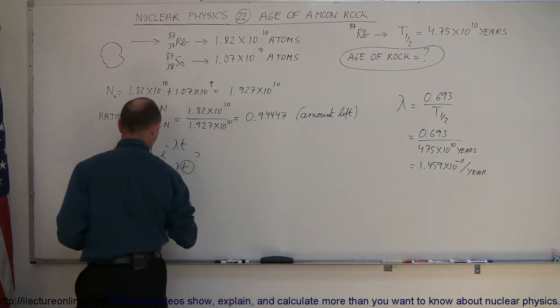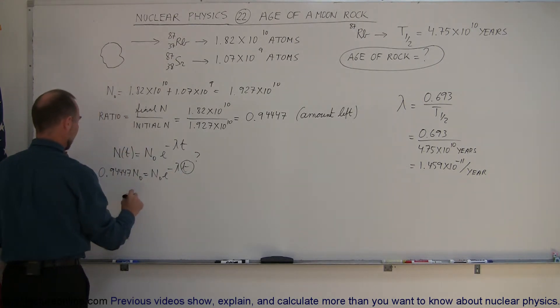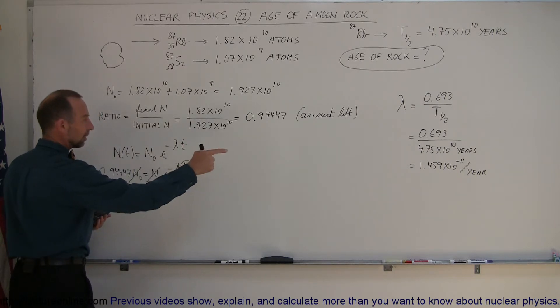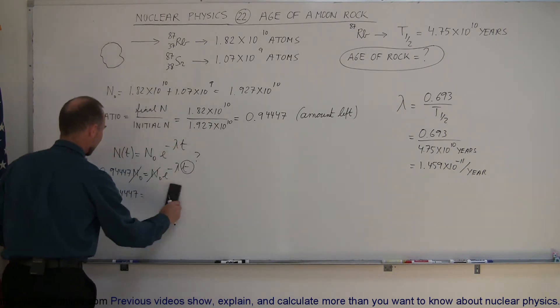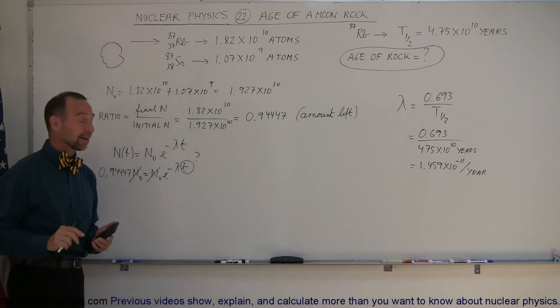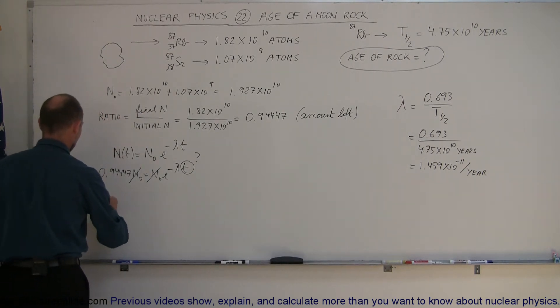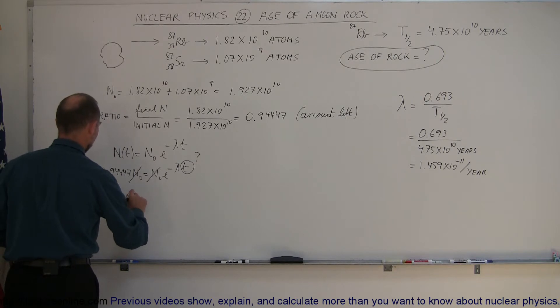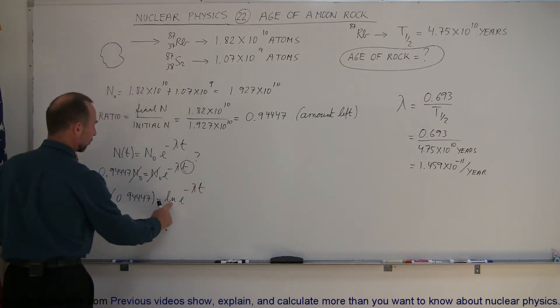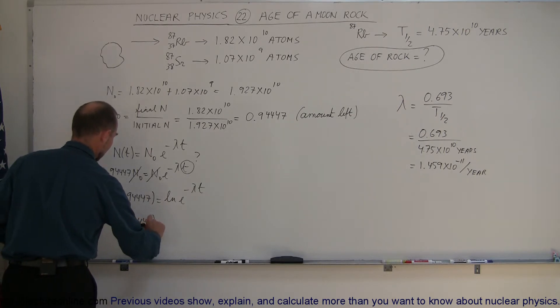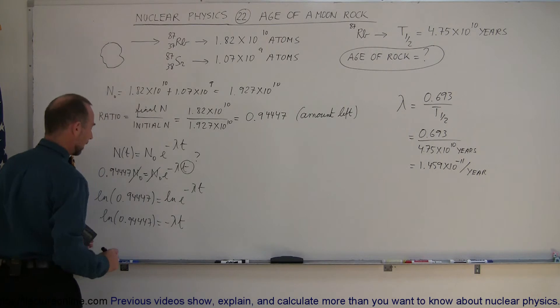So now that we have the decay constant, we can come back over here and plug that in here. So we have, and also, the ends of knoughts cancel out. So we have 0.94447 is equal to E to the minus the decay constant, which is 1 point... You know what? I think it's easier before these numbers all become very big. Why don't we just solve for T first and then plug that in for the decay constant? That's probably an easier thing to do. So let's take the natural log of both sides. The natural log of 0.94447 is equal to the natural log of E to the minus lambda times T. And of course, this will negate that. And we'll get the natural log of 0.94447 is equal to minus lambda times T.